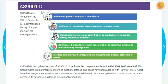AS9100 Revision D was released on the 20th of September 2016. It introduced key changes including: first, the addition of product safety as a new clause; second, the addition of counterfeit part prevention in a new clause; third, individual awareness and contribution to product and service quality, safety, and ethical behaviour; fourth, the addition of human factors with consideration to corrective action and non-conformity management; and fifth, clarified and improved configuration management to address stakeholder needs.